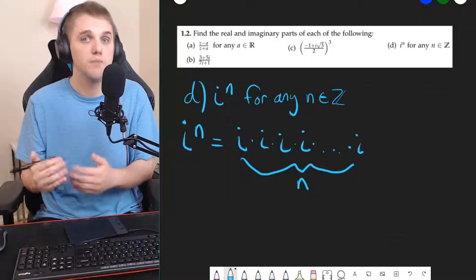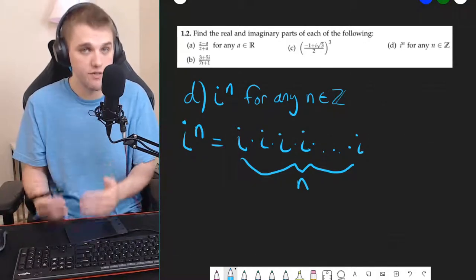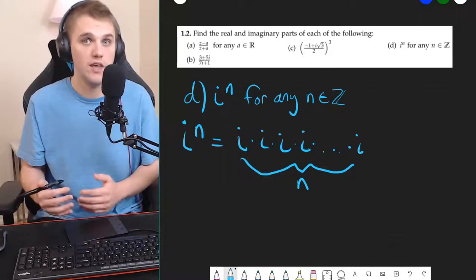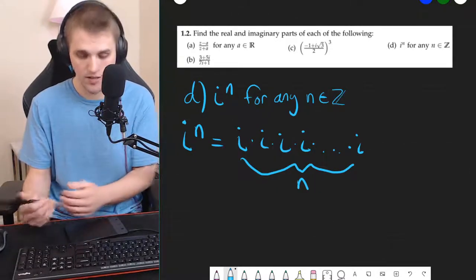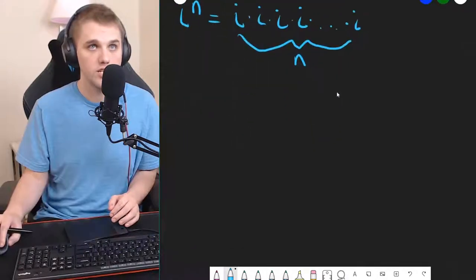We're going to pick values of n, specific integers for n, and we're just going to look at what i raised to that power is. So, let's start with a table.